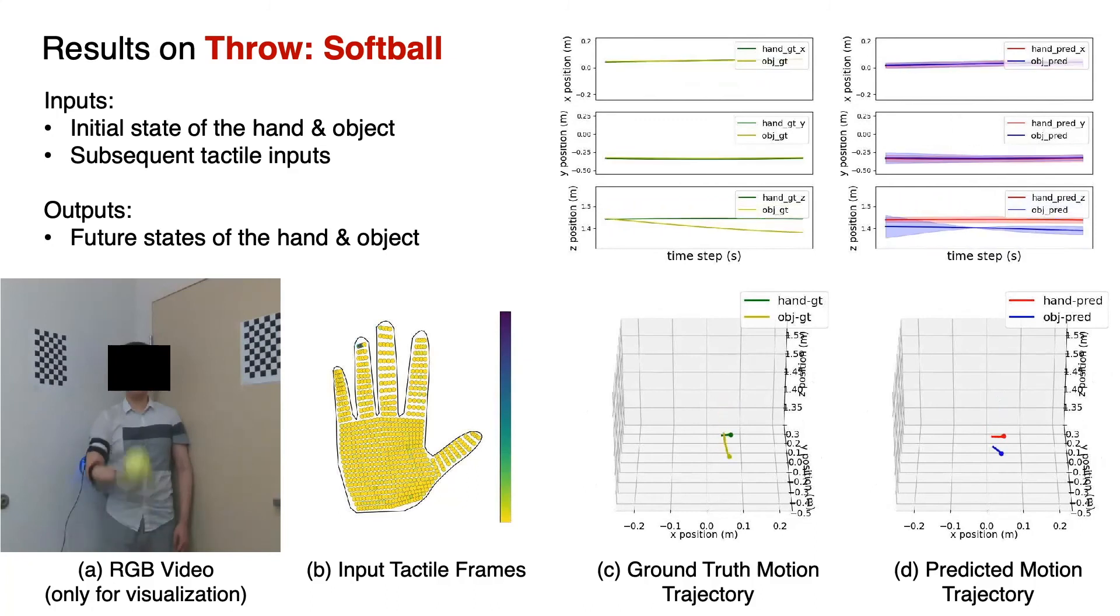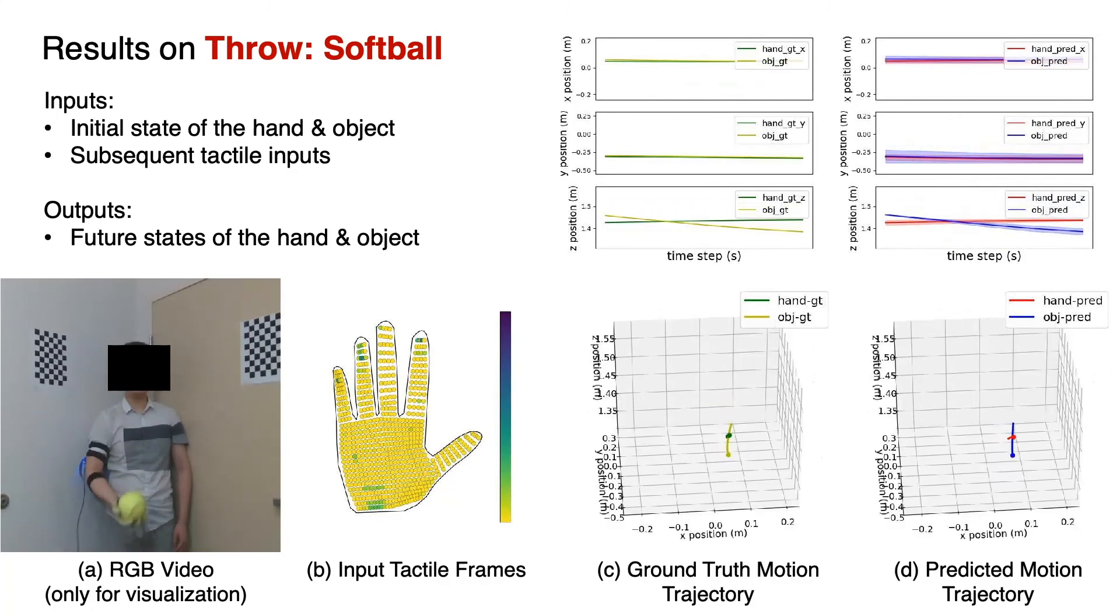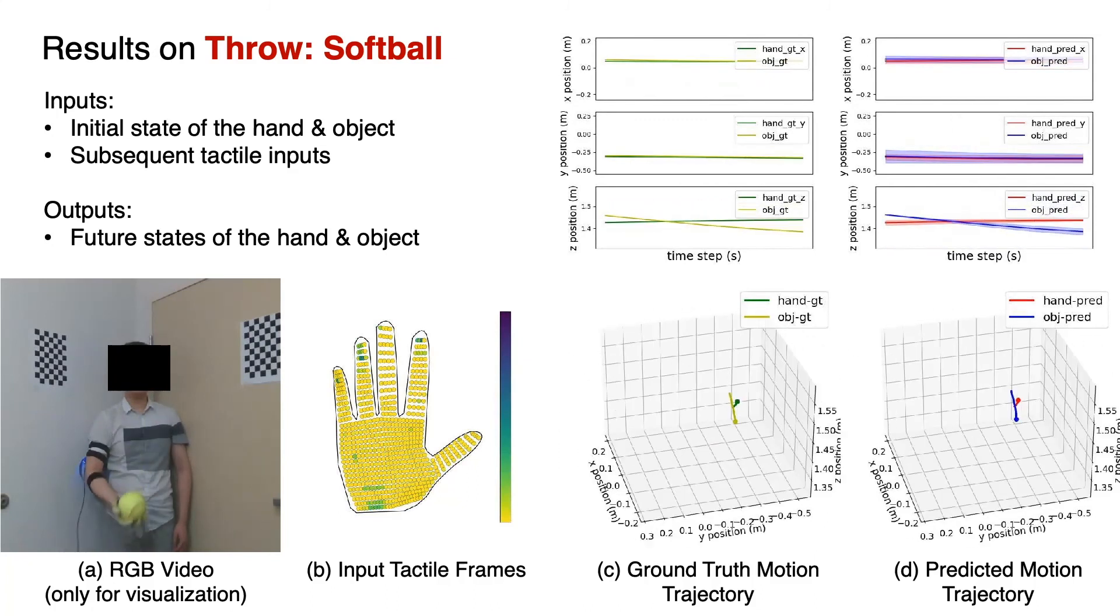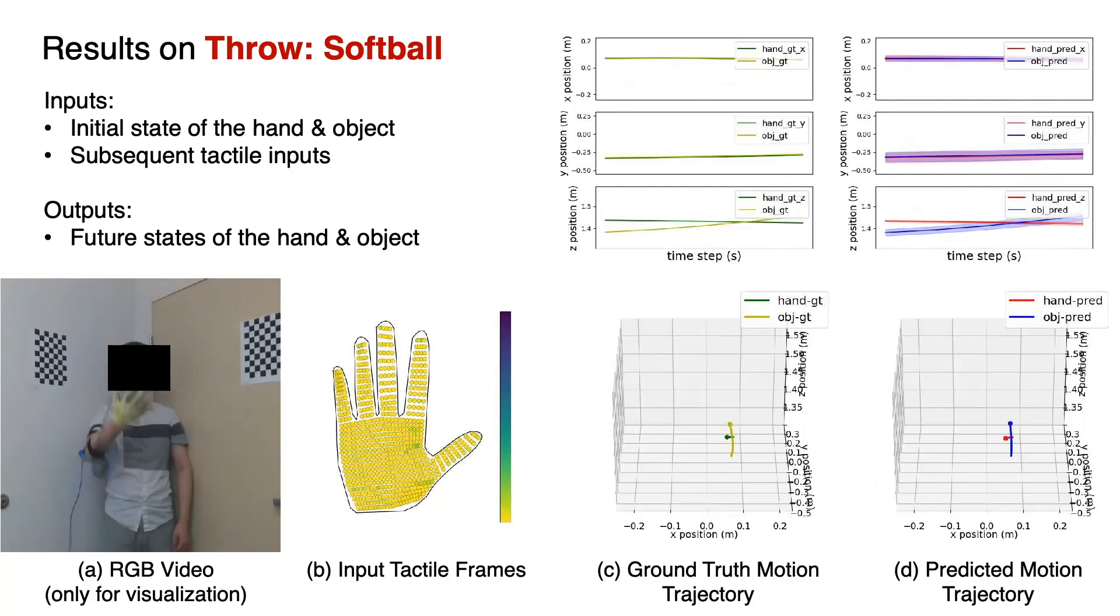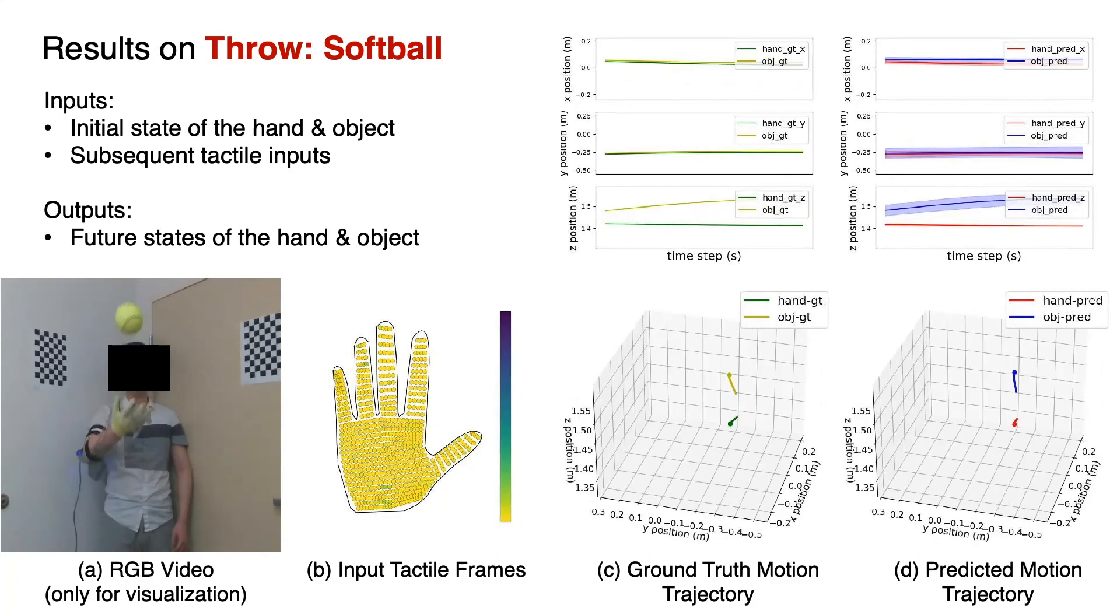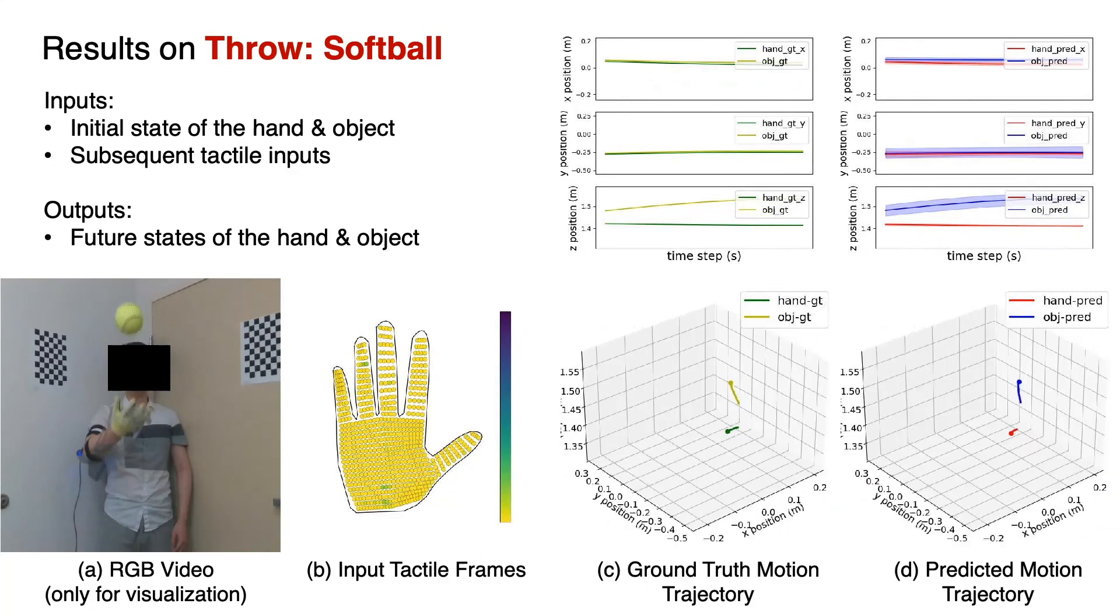Here we show the results on throwing a softball. Again, the inputs to our model are the initial state of the hand and the object, and the subsequent tactile inputs. The outputs are the future states of the hand and the object.